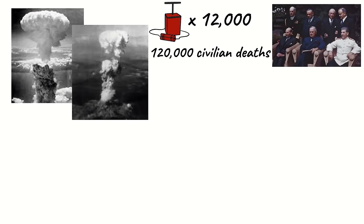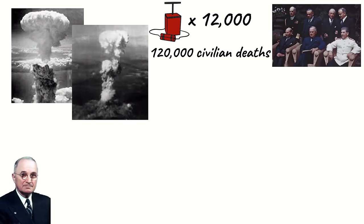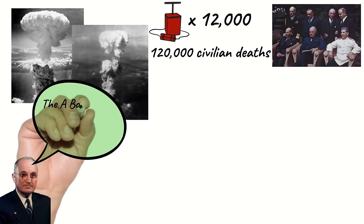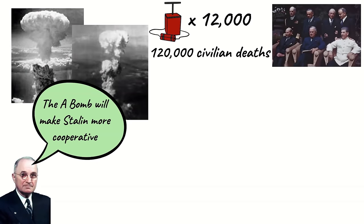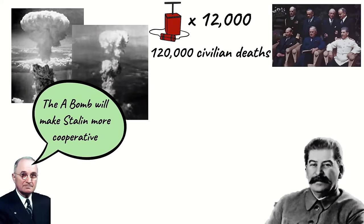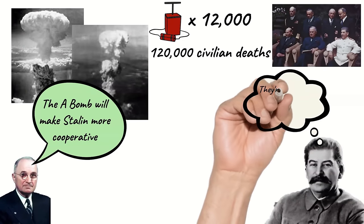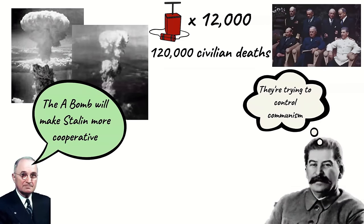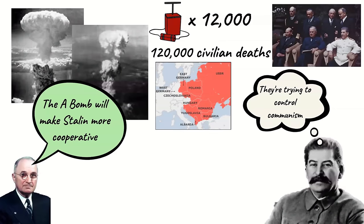The use of the atomic bomb changed everything for the USA and the USSR. Truman felt more confident in the Potsdam negotiations and hoped it would intimidate Stalin and ensure Stalin's cooperation with the USA. Stalin, on the other hand, responded in the exact opposite way to which Truman had hoped. He was afraid the USA would use the bomb to control communism and therefore was even more determined to create a buffer zone to protect the USSR.